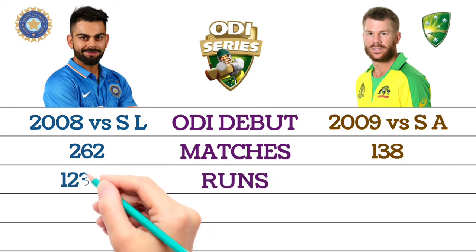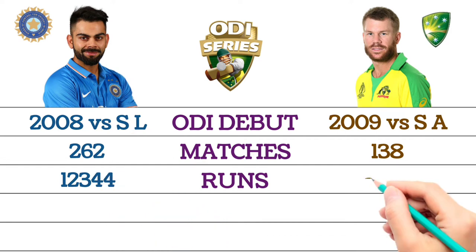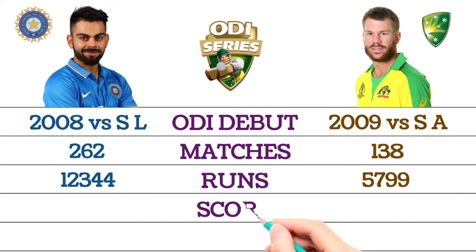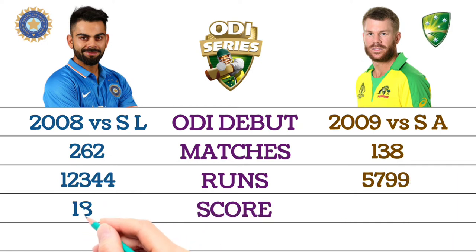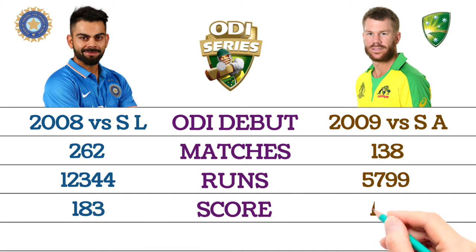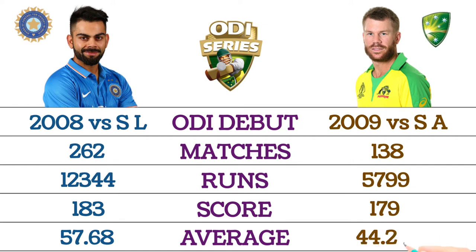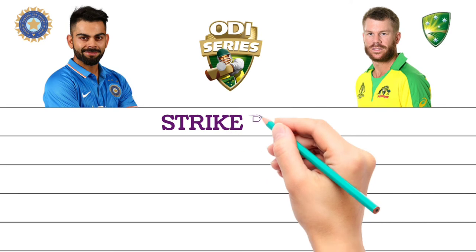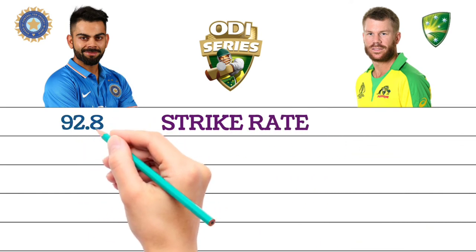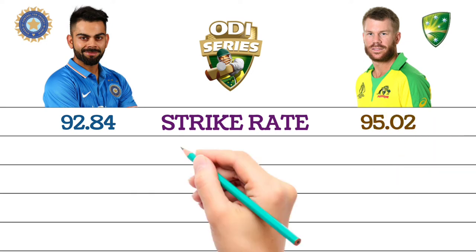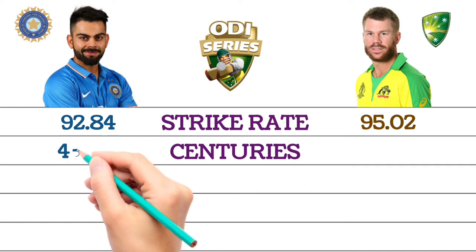ODI total runs: Virat Kohli 12,344 runs, David Warner 5,799 runs. Top score: Virat Kohli 183 runs, David Warner 179 runs. Average: Virat Kohli 57.68, David Warner 44.27. Strike rate: Virat Kohli 92.84, David Warner 95.02. Centuries: Virat Kohli 43 centuries and 64 half-centuries.